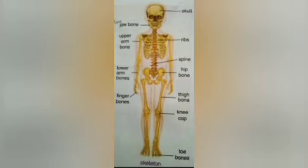Dear kids, do you know some of our body parts are so delicate that they should be protected, and the bones protect them. The skull is like a helmet and it protects your brain. Ribs protect your lungs and heart. Spine works like a pillar to support the body.